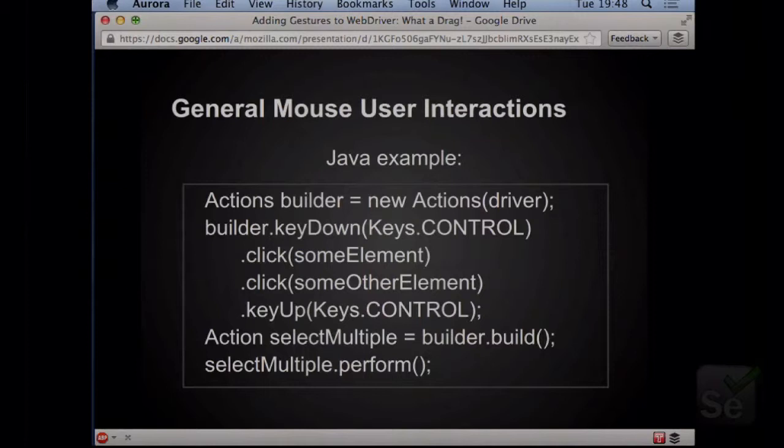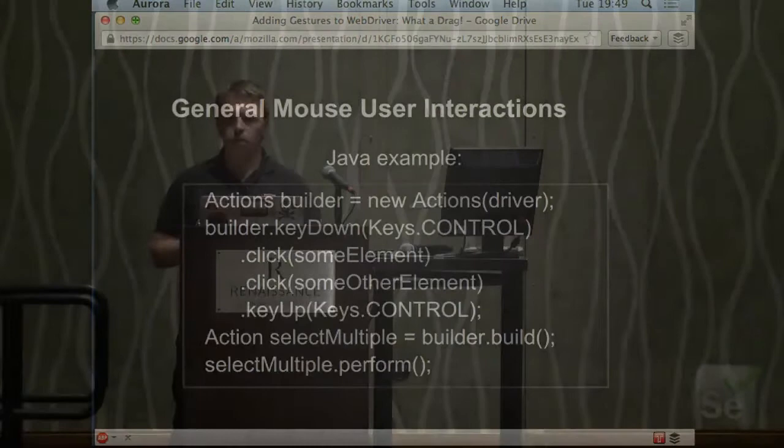Here's an example. We want to do multiple clicks while holding a key down. For those who have not actually used advanced interactions, this is kind of what it would look like in Java. You can just build this chain and then perform it. This is how people have been using web applications for a while, and this is why Google built this API. I think they did a really good job of it, and for desktop it works brilliantly.